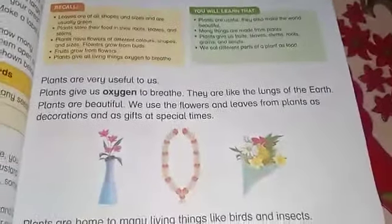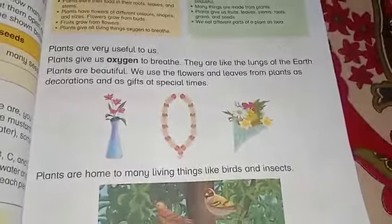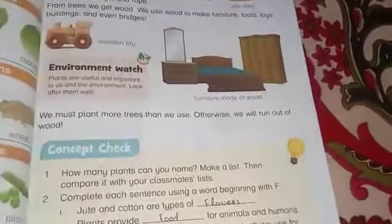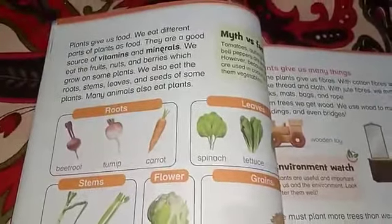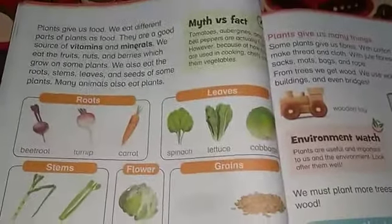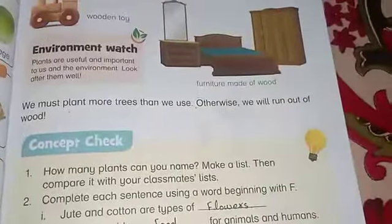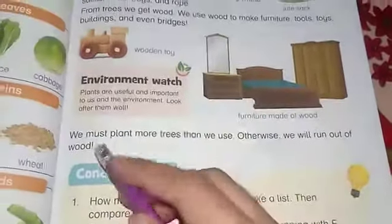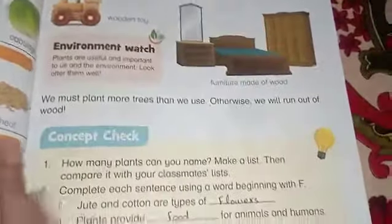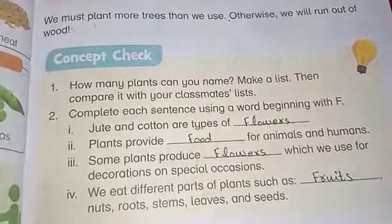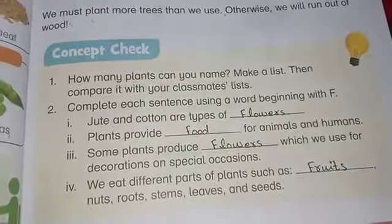Page number 25 پر ہم اس کی reading کر رہے تھے اور different plants کے بارے میں پڑھ رہے تھے۔ Plants کے علاوہ ہم نے یہ پڑھا تھا کہ کون کون سے plants کے حصے جو ہیں وہ ہم اپنی daily routine میں کھاتے ہیں۔ Page number 26 میں ہم نے یہ سارا بتایا تھا۔ آج ہمارے پاس page number 27 ہے۔ اس reading جتنی reading ہم کر چکے ہیں اس میں سے ہمارے پاس concept check ہے، سب سے پہلے ہم یہ کریں گے۔